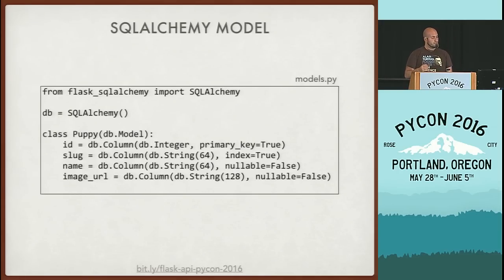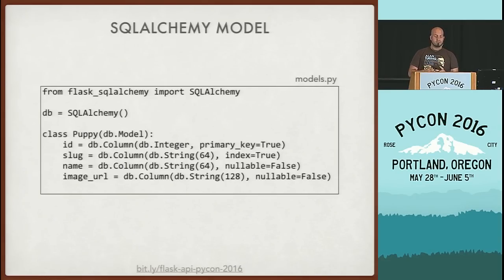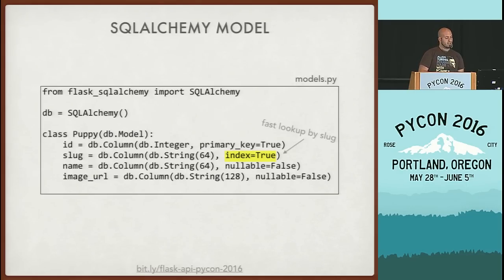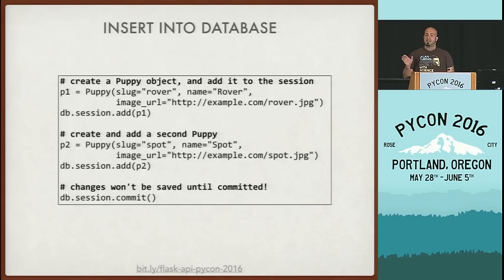An object-relational mapper allows you to query and update data in a database without writing straight SQL — instead you treat it in a more Pythonic fashion. Here is the model for our puppy API. We import from the Flask SQLAlchemy module, initialize it, and create our Puppy class as a subclass of Model. This class has four pieces of information: a numerical ID used by the database, a slug for human-friendly lookups, and a name and image URL. I've added index=True on the slug field and specified that name and image URL are not optional.